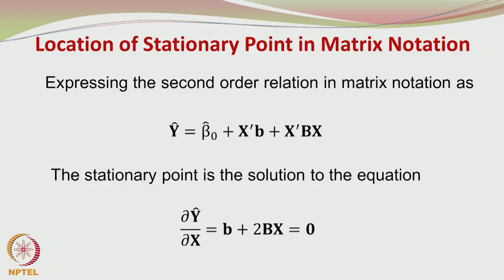Coming back to our response surface methodology approach, we can represent the second order model in matrix notation as shown here, Y hat equals beta naught hat plus x prime b plus x prime Bx. The stationary point of the solution can be obtained by differentiating this in matrix terms to get b plus 2Bx and we get the stationary conditions by equating this to 0. All the bold terms indicate that they are vectors and matrices and not regular usual scalars.